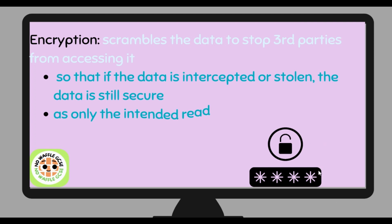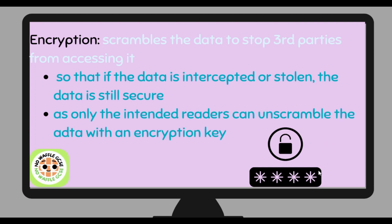And finally, encryption. Encryption scrambles the data in order to stop third parties from accessing it. So if the data is intercepted or stolen, the data is secure because it's just in random ciphertext, as only the intended reader can unscramble the data with the encryption key that they have been given.